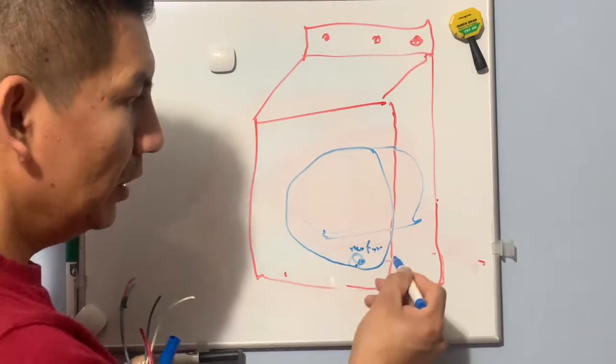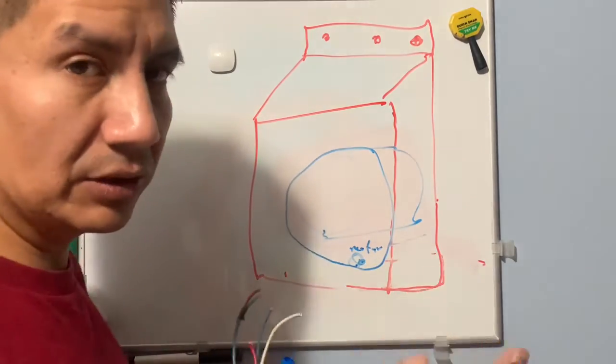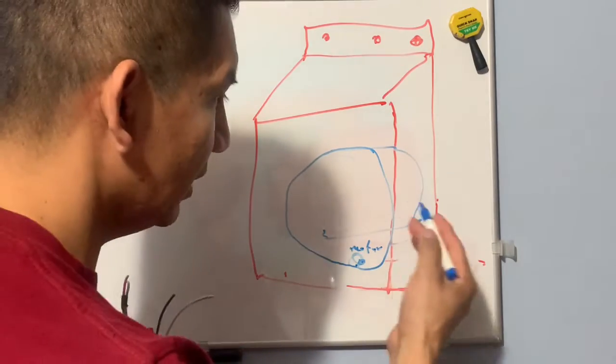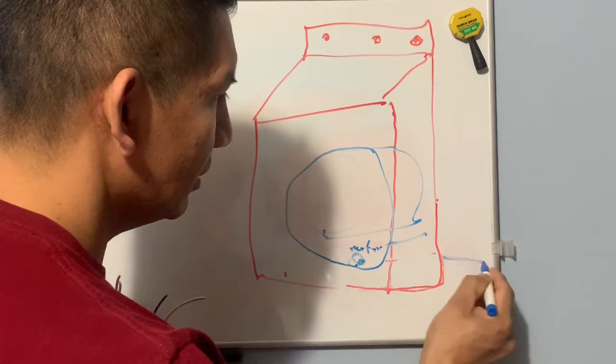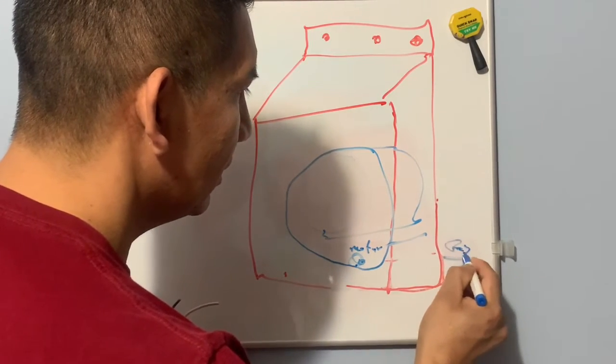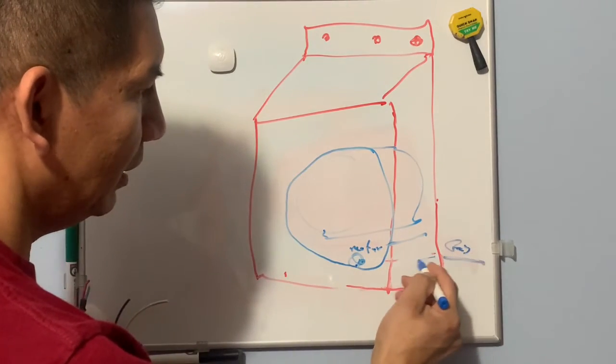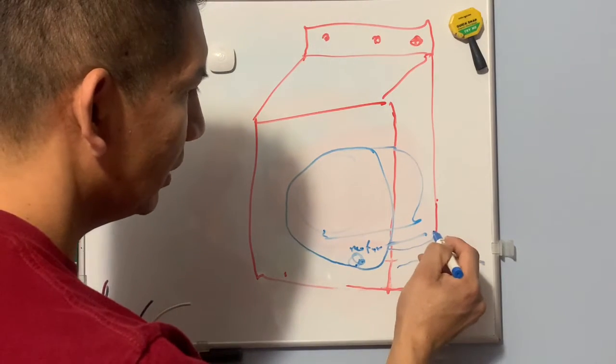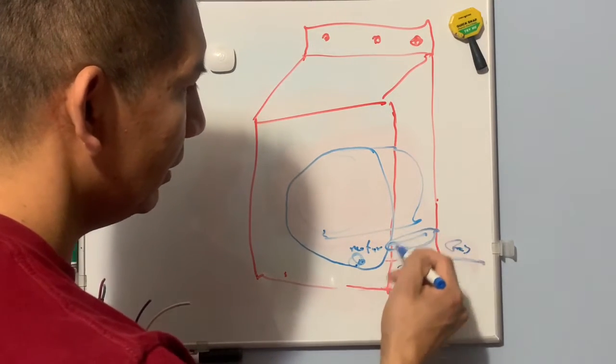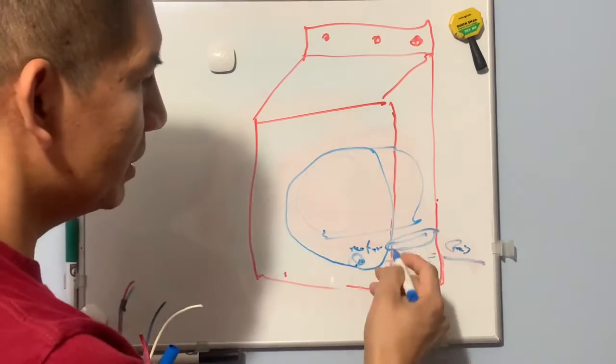We have here the flame duct - we're talking about the gas one. This is the gas dryer, so we have the duct right here. Gas comes through here, flames up everything, and the flame comes to this duct.